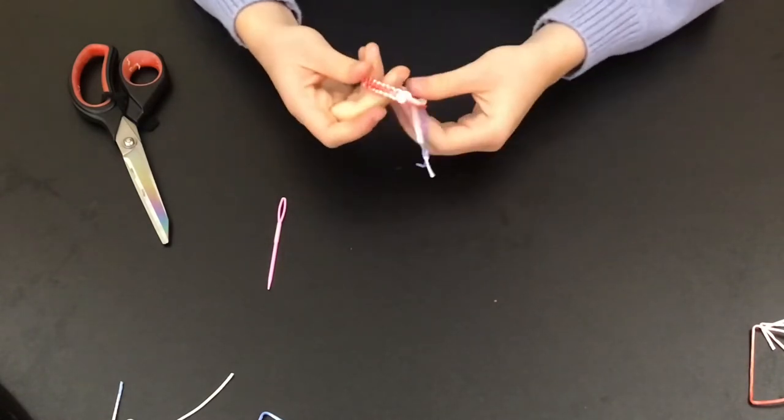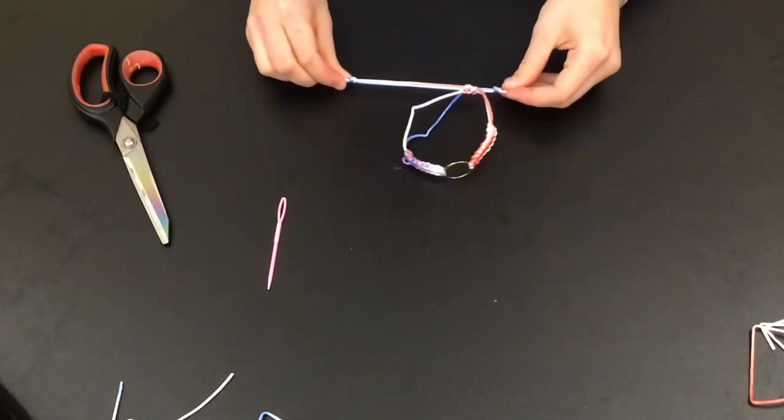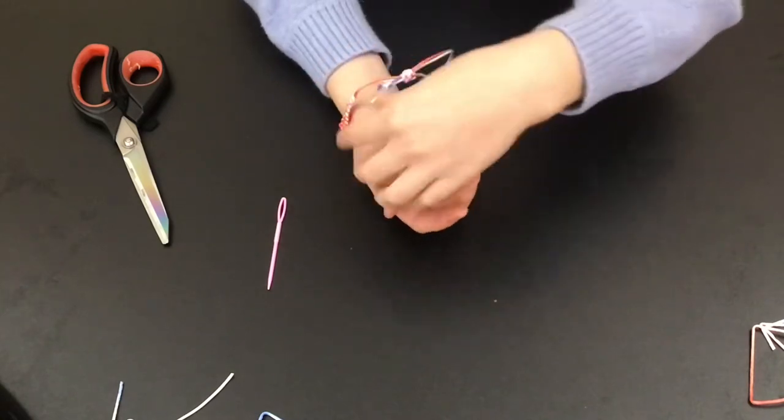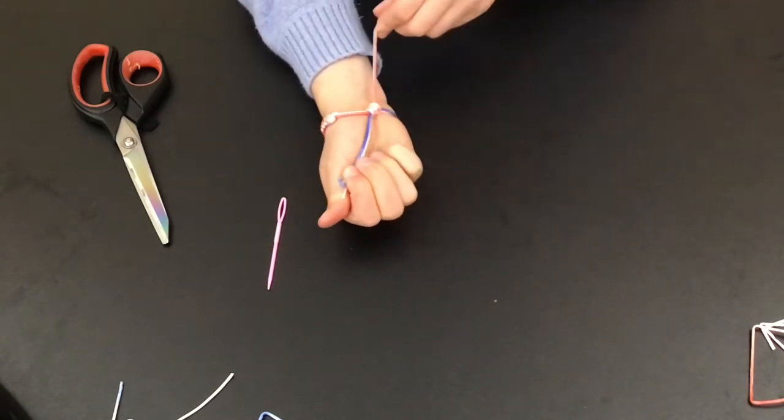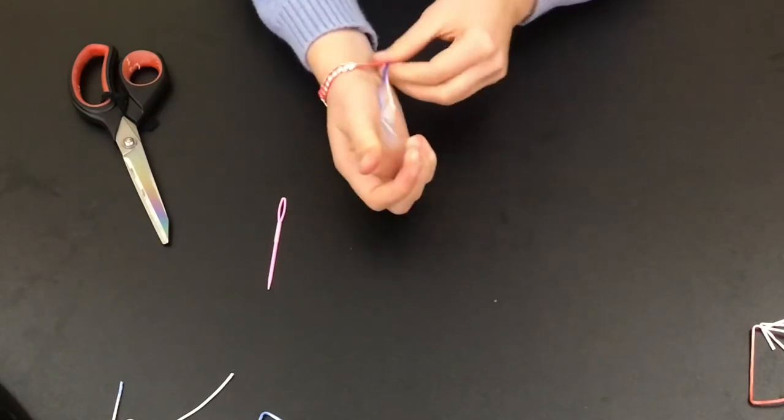Now it's time to make your bracelet the actual correct size for your wrist. So you're going to want to put the bracelet on and then measure where you need the knots to be so you can still get the bracelet off. Then re-tie those knots, cut off the ends, and you're done.